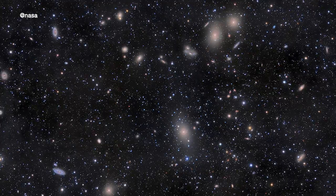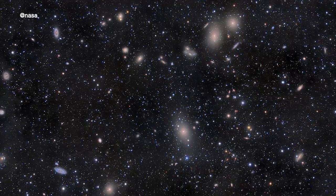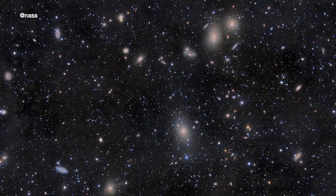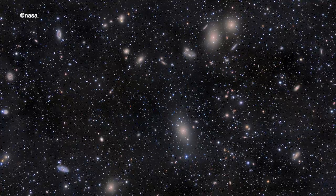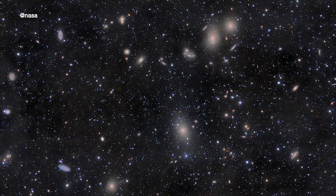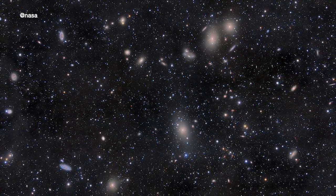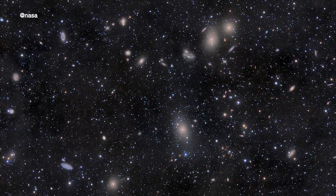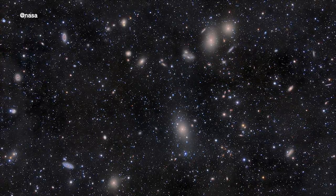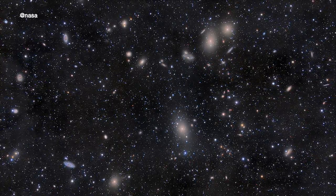There, the density plunges to perhaps 10 to 30 grams per cubic centimeter. That is, to be sure, not entirely empty. Voids do contain a few dim dwarf galaxies. Molecules of cold hydrogen and helium float among them, some blown out of their home galaxies, the rest left over from the Big Bang.